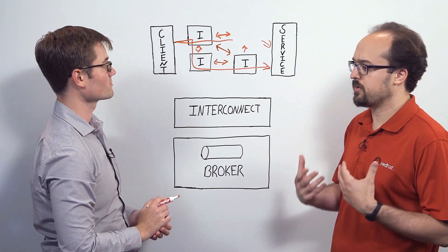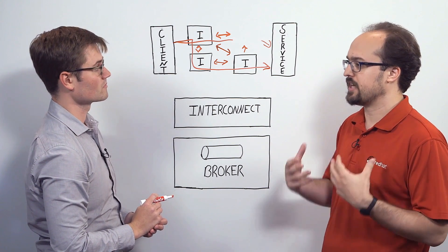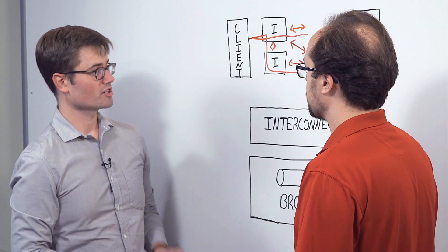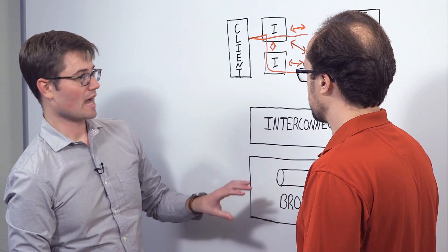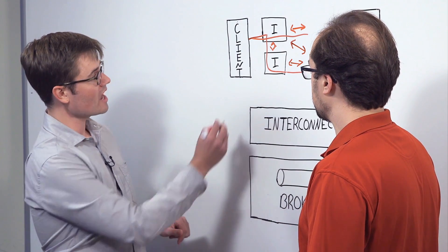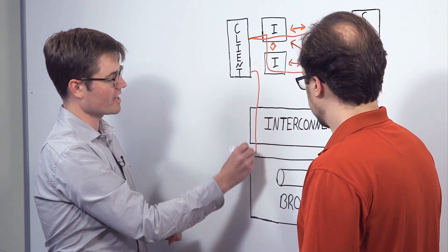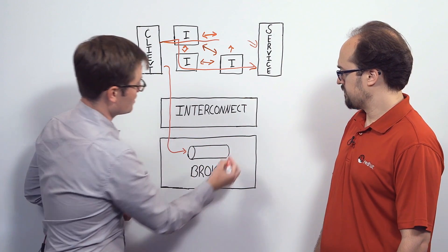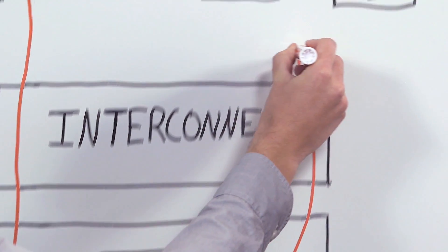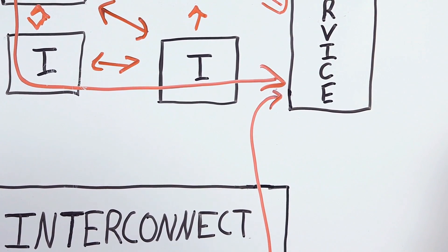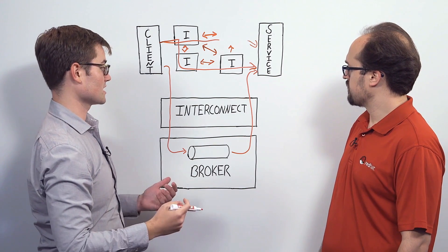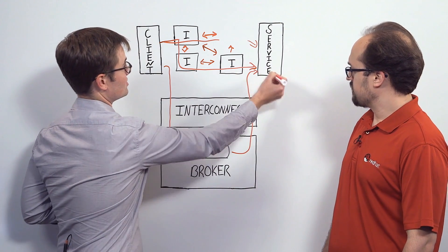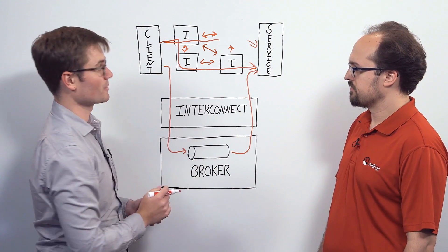What about use cases where I still need a queue — message batching, offline processing, that kind of thing? You can add a broker behind an interconnect. Your client will still send a message through the interconnect, but behind that it's being enqueued. The service is still receiving its message from the interconnect, but the message has gone from the broker to the interconnect and then to the service, so we've transparently added this broker behind the scenes.